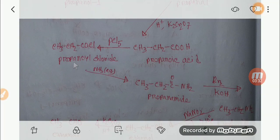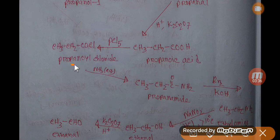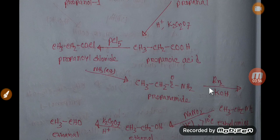This propanoyl chloride will react with ammonia, aqueous ammonia, and this chlorine will be replaced by NH2 group. You will get propanamide, which is amide. Then, you have to apply Hoffman degradation reaction - that is, you have to add bromine and potassium hydroxide.